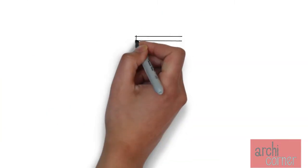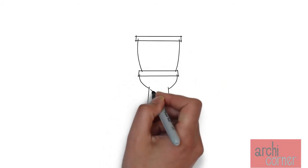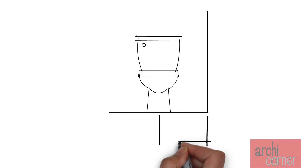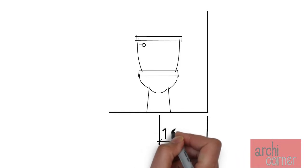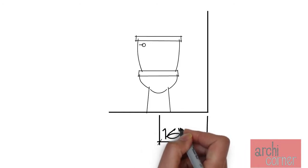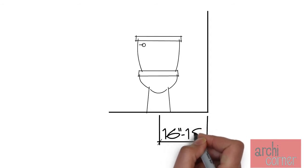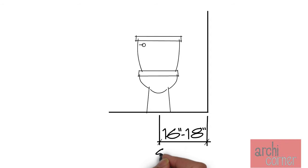A water closet needs to be positioned with a wall or partition to the rear and to one side. The center line of the water closet has to be 16 inches minimum to 18 inches maximum away from the side wall or partition. That's really the only requirement for the side location of a toilet.